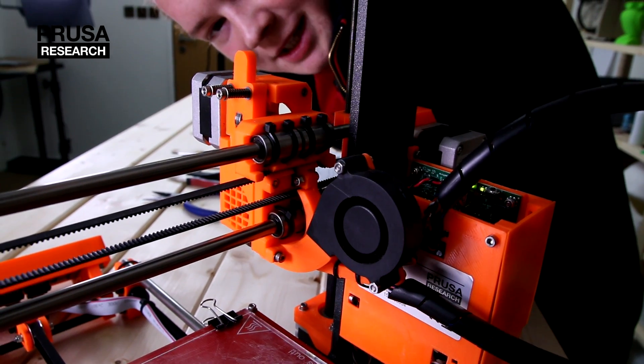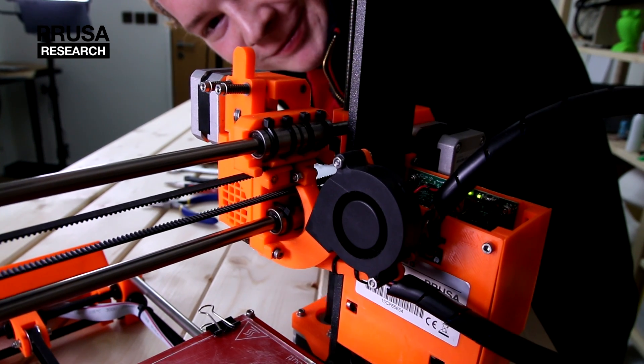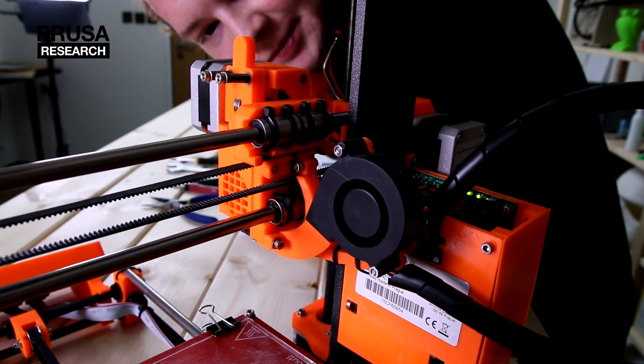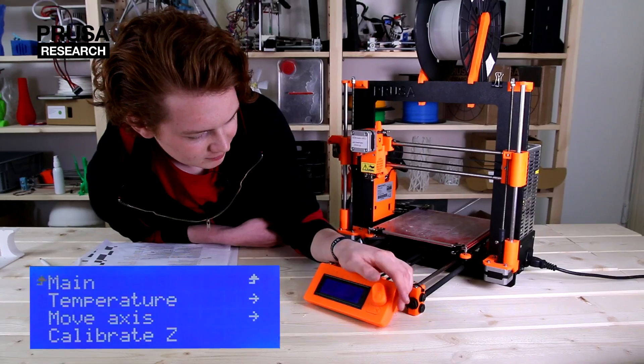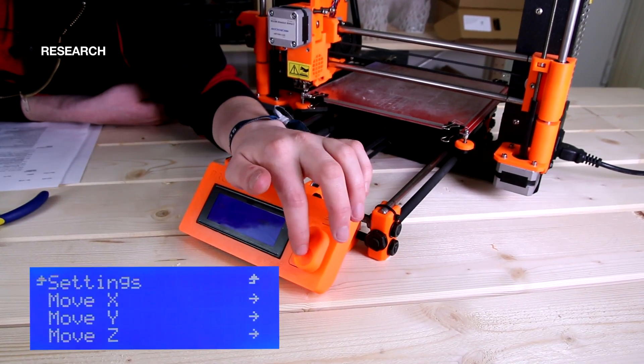To get to the nozzle, we need to move the extruder upwards. We will choose settings in the LCD menu, move axis, move Z axis and set the height.